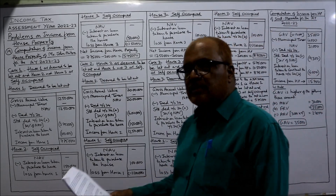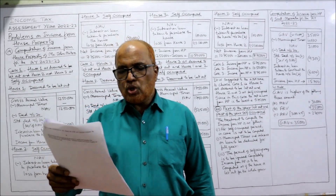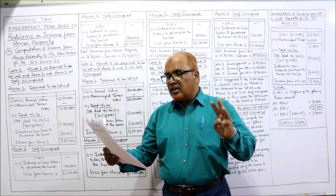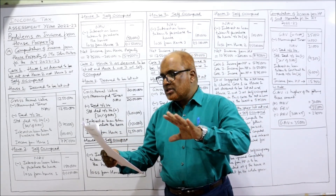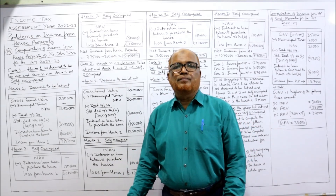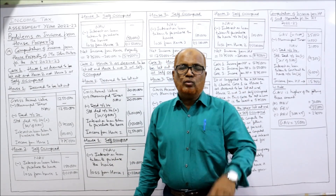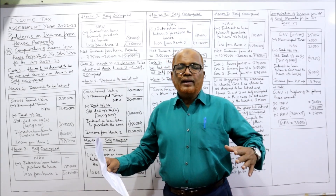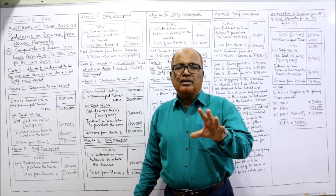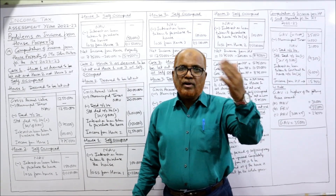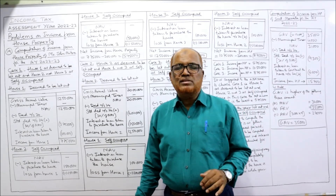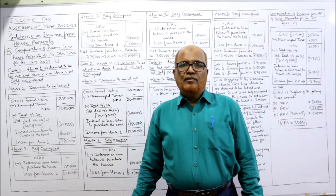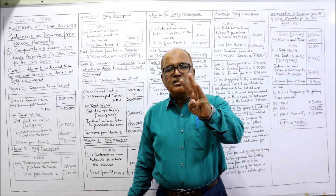Now see the 19th problem. Mr. John Mitra, who has income from all other heads of 2 lakh 50 thousand rupees, owns three house properties and uses all the houses for his residential purpose. This is exactly similar to the 18th problem. According to the Income Tax Act, only two houses can be treated as self-occupied; any house beyond two will be treated as deemed to be let out.